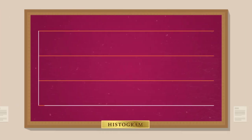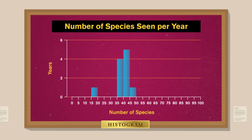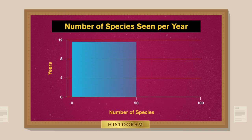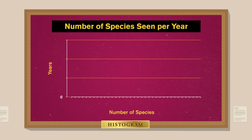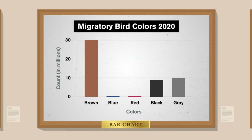A histogram helps tell a story about the distribution of a variable. Instead of putting a marker for each data point, we put each one into a group, or bin. We might want to see how the total number of species seen each year is distributed — some years 40, some years 35 or 42. We split the range into bins: one for 40–45 species, one for 35–40, and so on. The bins go across the horizontal axis, and the vertical axis tracks frequency. Importantly, a histogram is not the same as a bar chart — in a bar chart, the vertical axis represents a value, not a frequency.